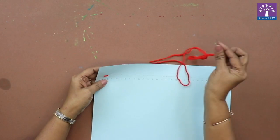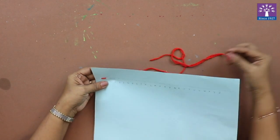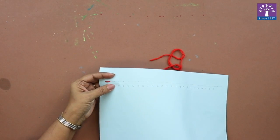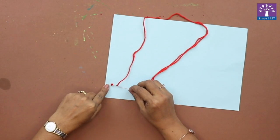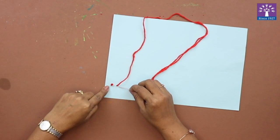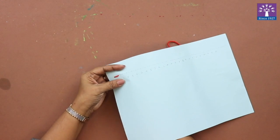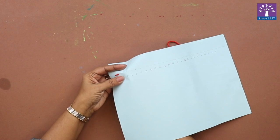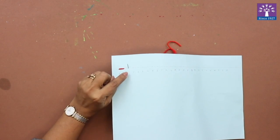See, you got one stitch. Now again on point C you will take it from behind. See, I'll turn the paper behind. You see that this string has come from behind.